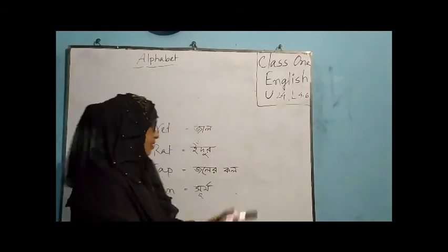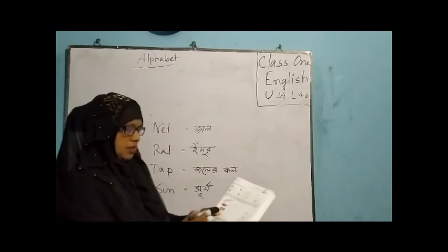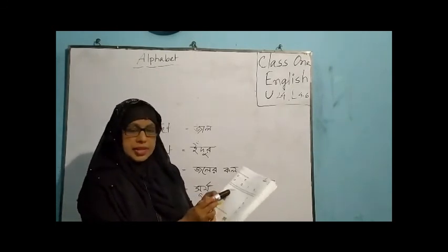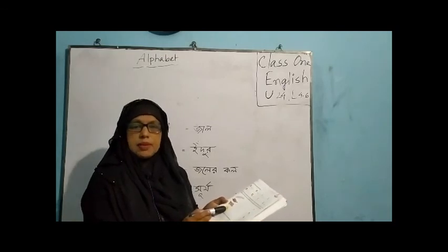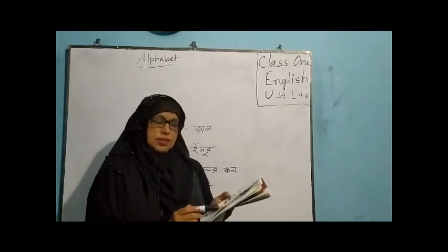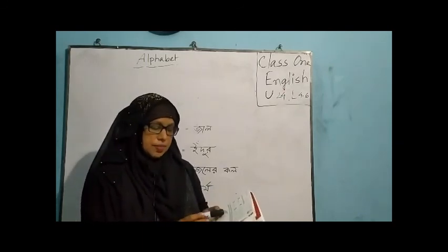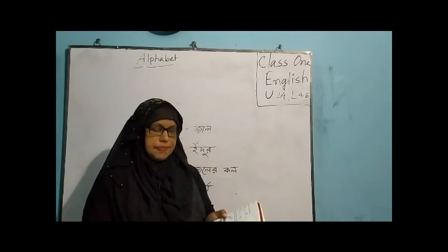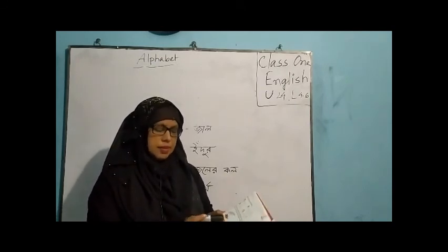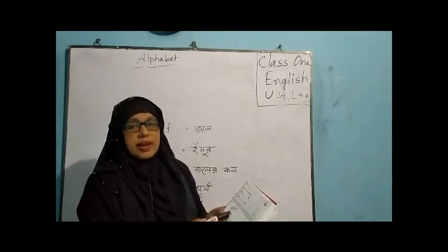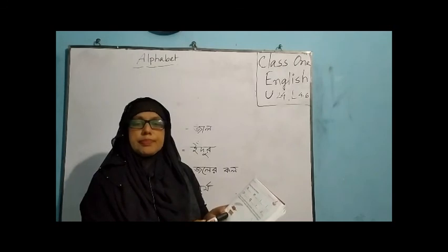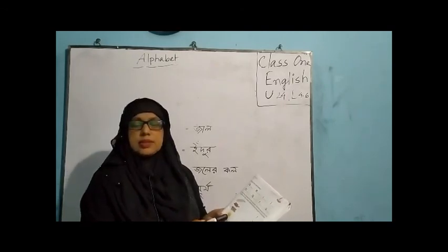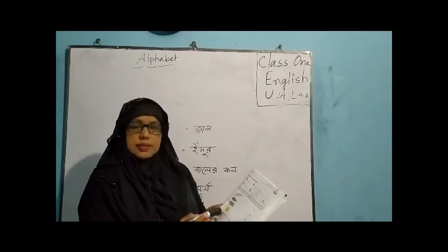Thank you students. So these are the words of the pictures: net, tap, sun. Now say the sound of the first letter of each word. Net — the first letter is N. Red — first letter is R. Tap — first letter T. Sun — first letter S.